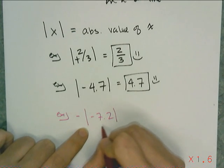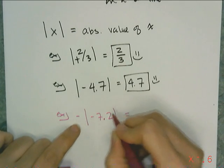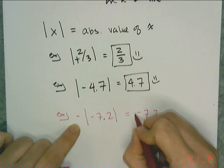and I take care of this absolute value, which is positive 7.2, but there's a negative sign on the outside, which means the actual quantity I need is negative 7.2.